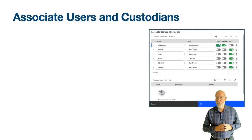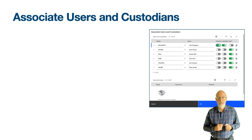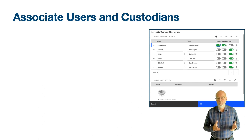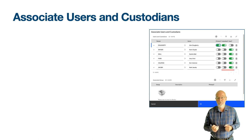We'll start by considering why you might wish to link a person with a location or asset. The obvious reason is ownership. The associate users and custodians feature was introduced when Maximo was addressing the handling of IT assets — the user or custodian would be the owner of a PC or laptop.